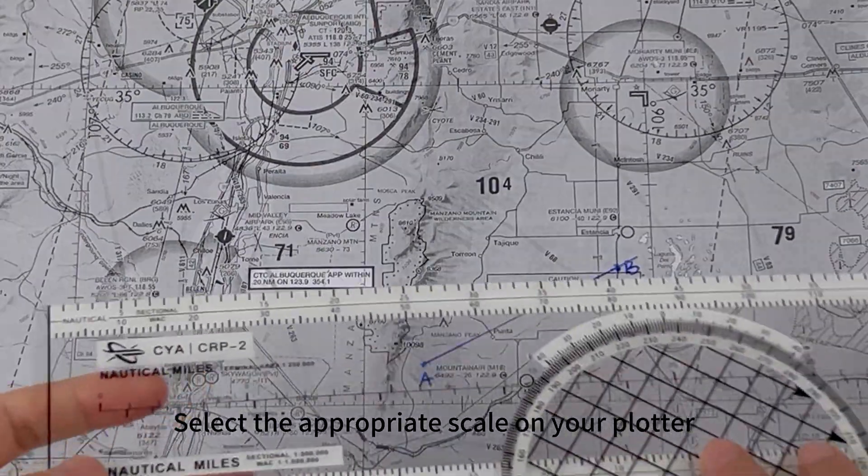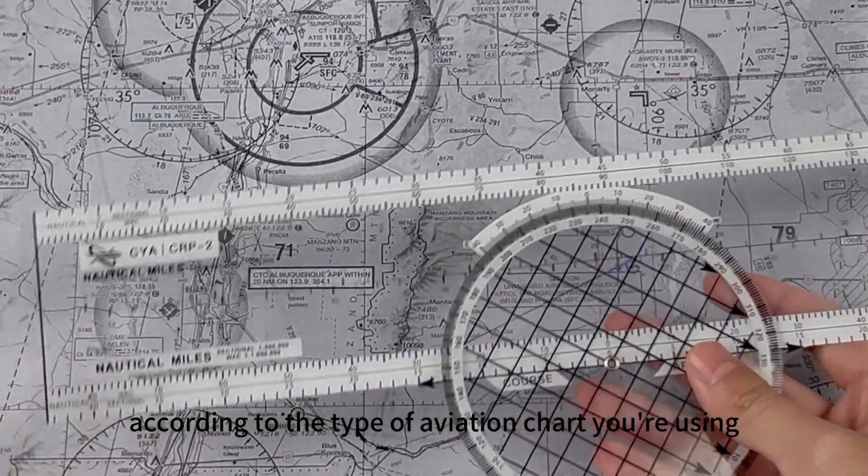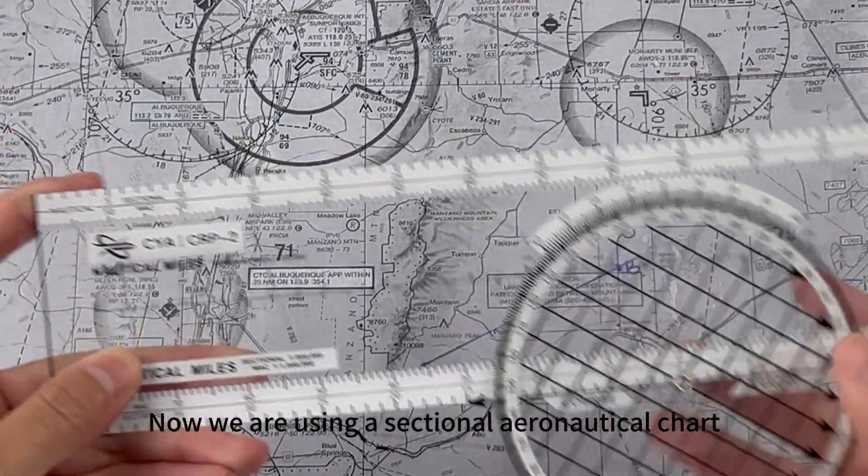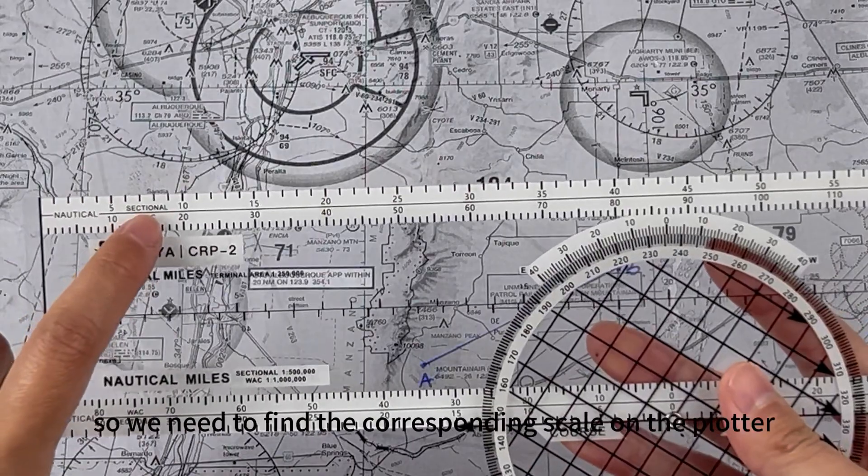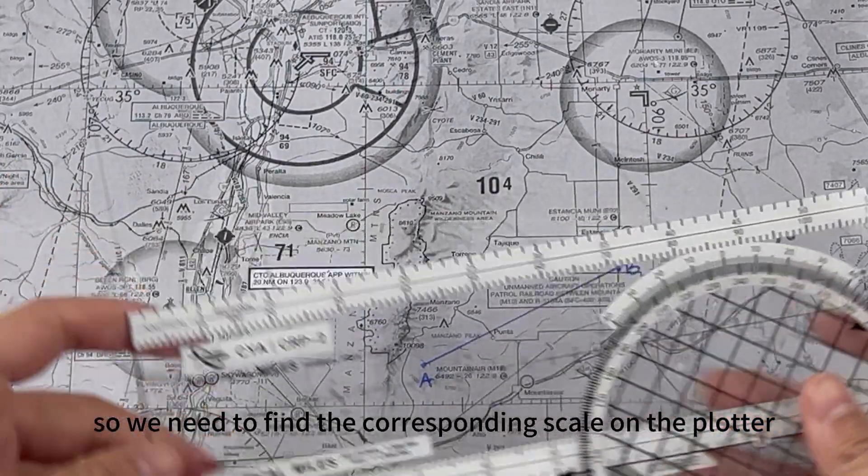Select the appropriate scale on your plotter, according to the type of aviation chart you're using. Now we are using a sectional aeronautical chart, so we need to find the corresponding scale on the plotter.